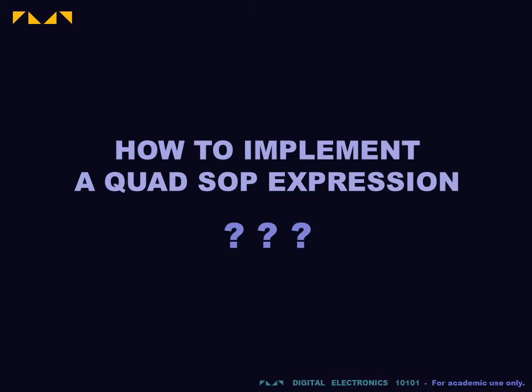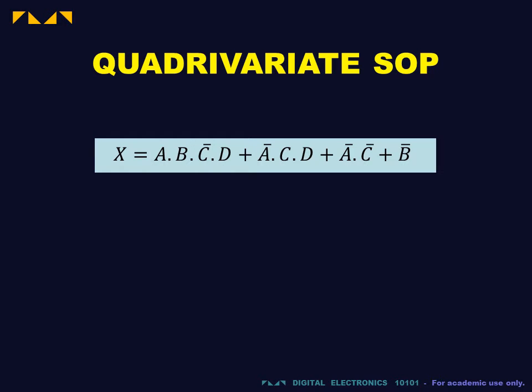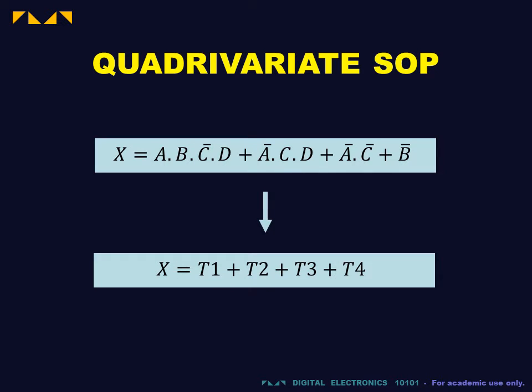We will study how to build circuits from quadrivariate SOP expressions. A quadrivariate expression is one that contains four input variables. When in SOP form, the output is expressed as the sum of product terms.